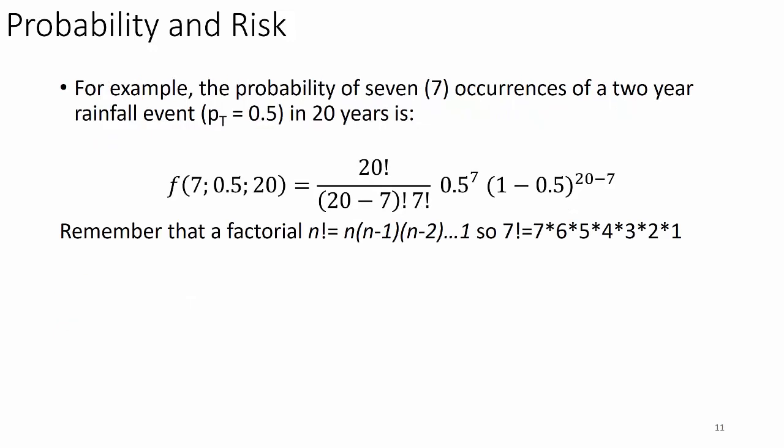For example, the probability of seven occurrences of a two-year rainfall event — 4.1 inches in Fayetteville, Arkansas, where P_T equals 0.5 — in 20 years is: f(7, 0.5, 20) equals 20-factorial over (20 minus 7)-factorial times 7-factorial, times 0.5 to the 7th, times (1 minus 0.5) to the (20 minus 7). Recall that N-factorial equals N times (N−1) times (N−2) ... down to 1. So 7-factorial equals 7 × 6 × 5 × 4 × 3 × 2 × 1. These numbers get large quickly.